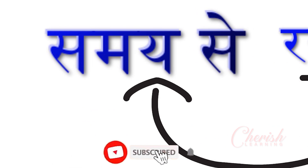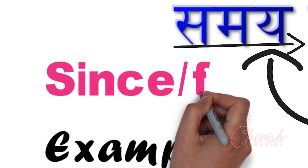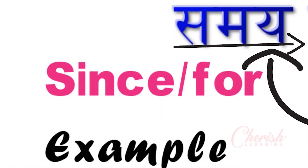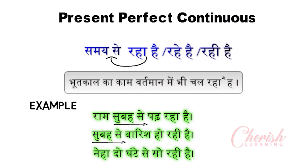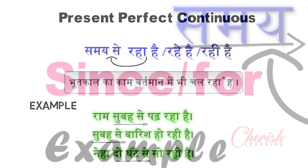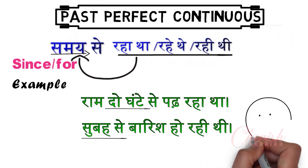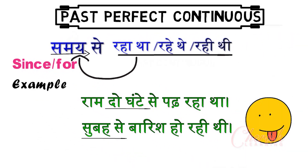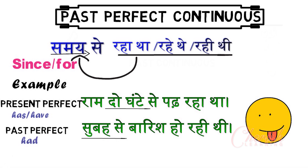Since there is a specific time, we use 'since' and 'for.' Trust me, there is no need to watch this video if you already know present perfect continuous, because there is only a difference between present and past. For present, it will be 'has' and 'have,' and for past it will be 'had.' It's really very simple. So click on the 'i' button and watch that video.